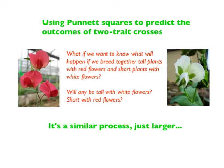Welcome to today's video about how to set up and carry out Punnett squares for two-trait crosses, where we're taking a look at two traits at the same time. For example, what would we have to do if we wanted to know what happened if we were breeding together tall red-flowered plants and short white-flowered plants? What kind of outcomes will we get — will we get any that are tall and white, or short with red, or will they all look like the parents? Setting up two-trait crosses is a lot like single crosses, just bigger, and there's an intermediate step we've got to do first.